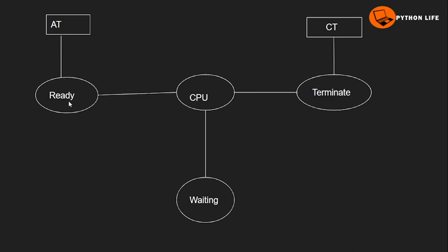Next is response time. Response time is necessary — as soon as the process is ready, we check how much time it takes to first get the CPU. The best scenario is when the process is allocated to the CPU as early as possible, meaning the minimum response time. These are the scheduling criteria and factors for CPU scheduling algorithms.